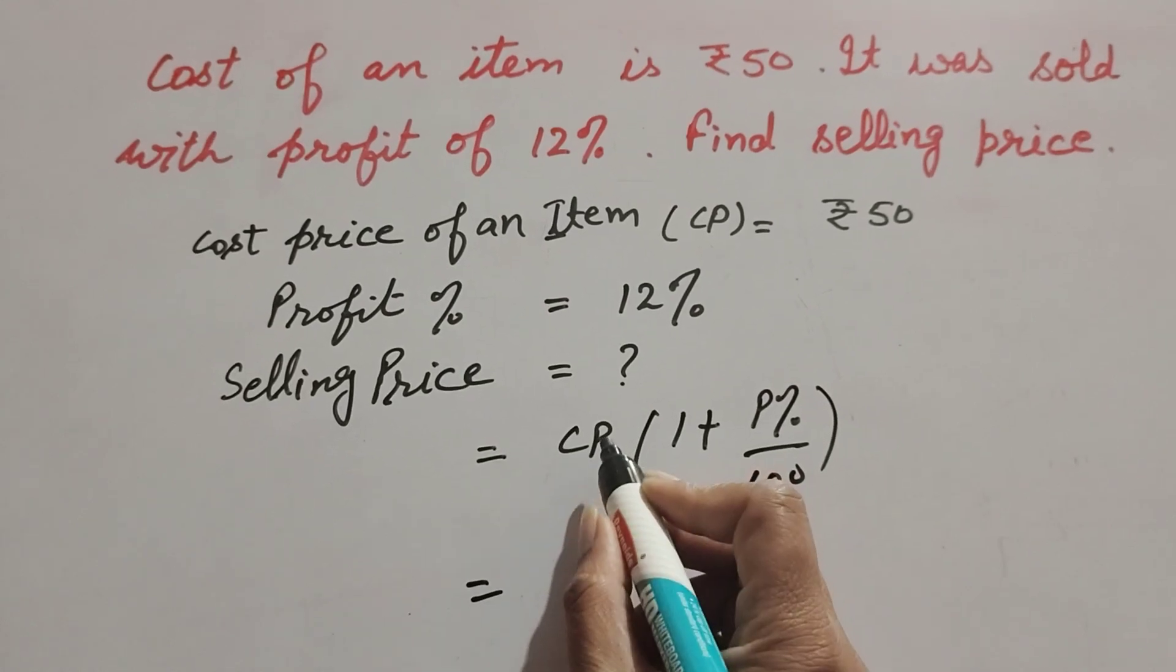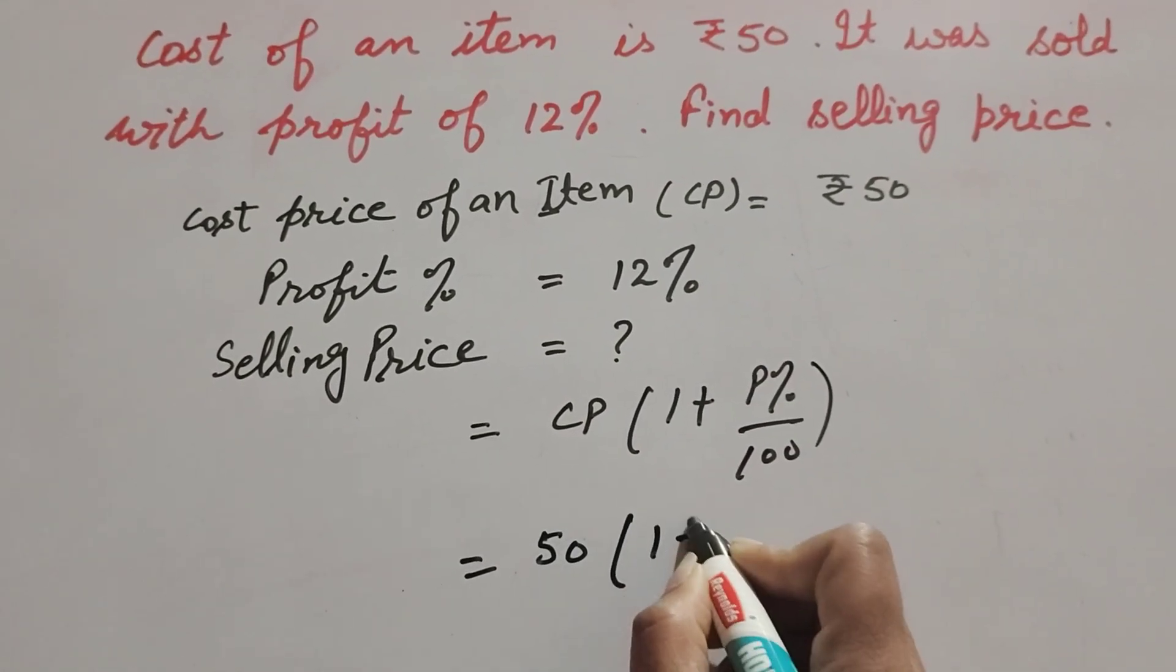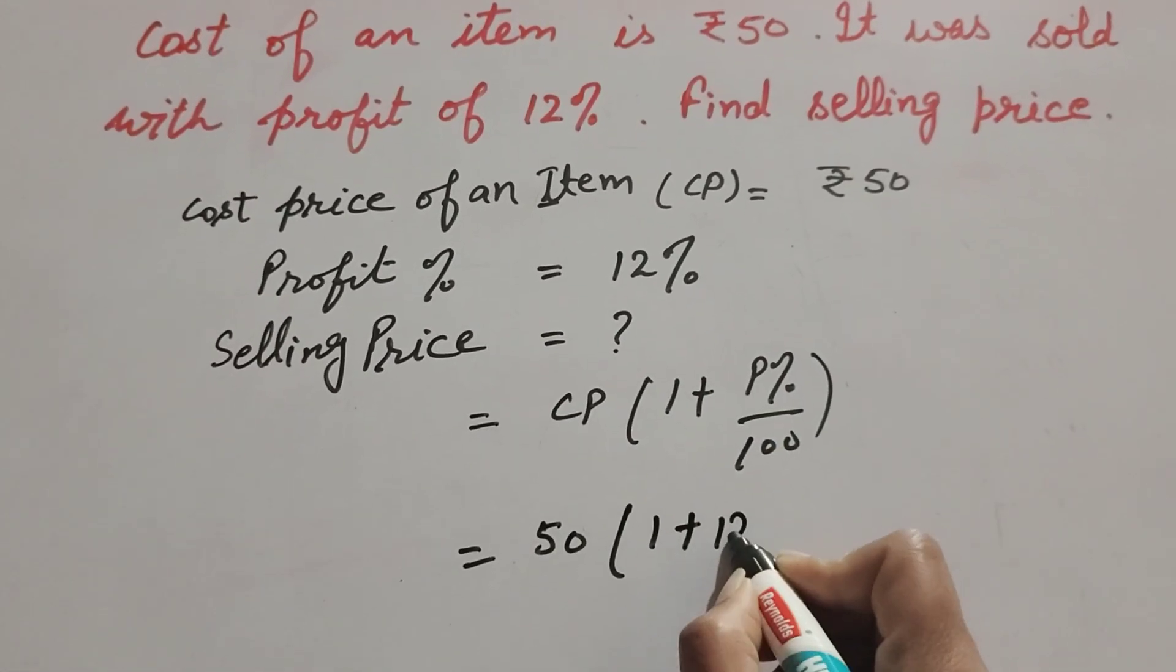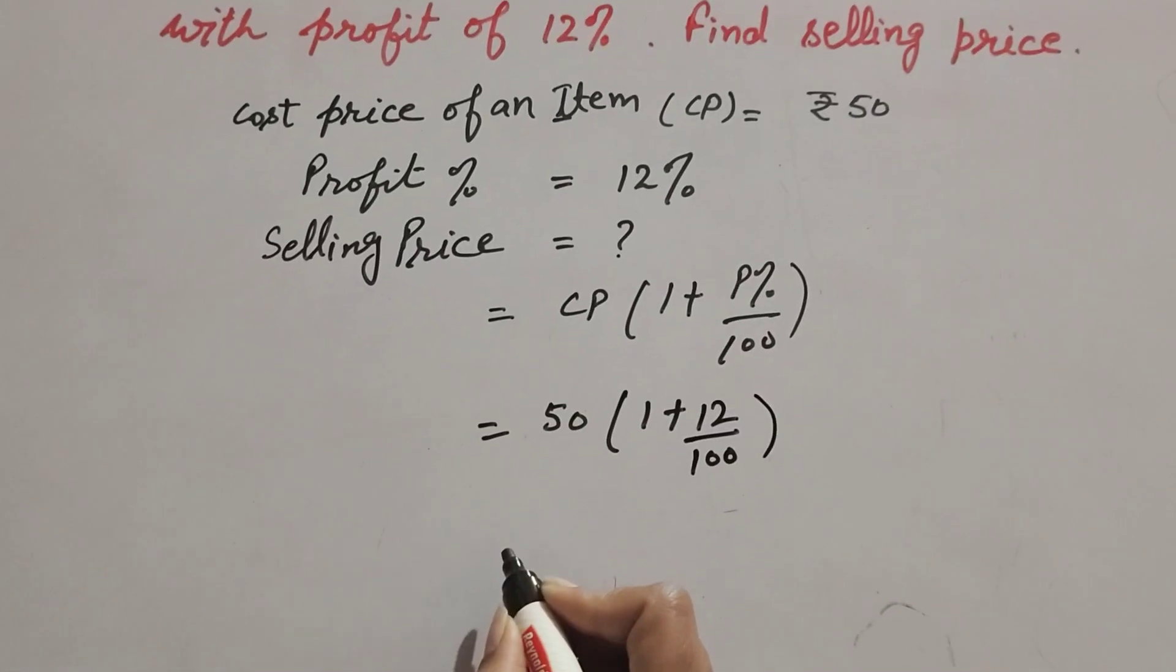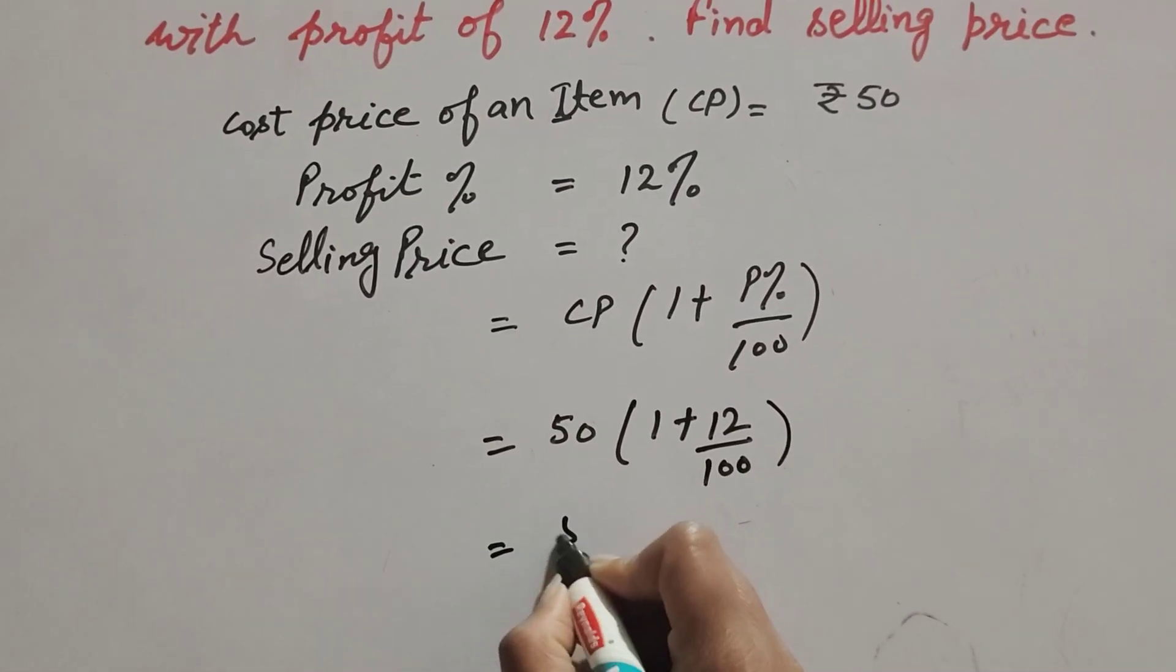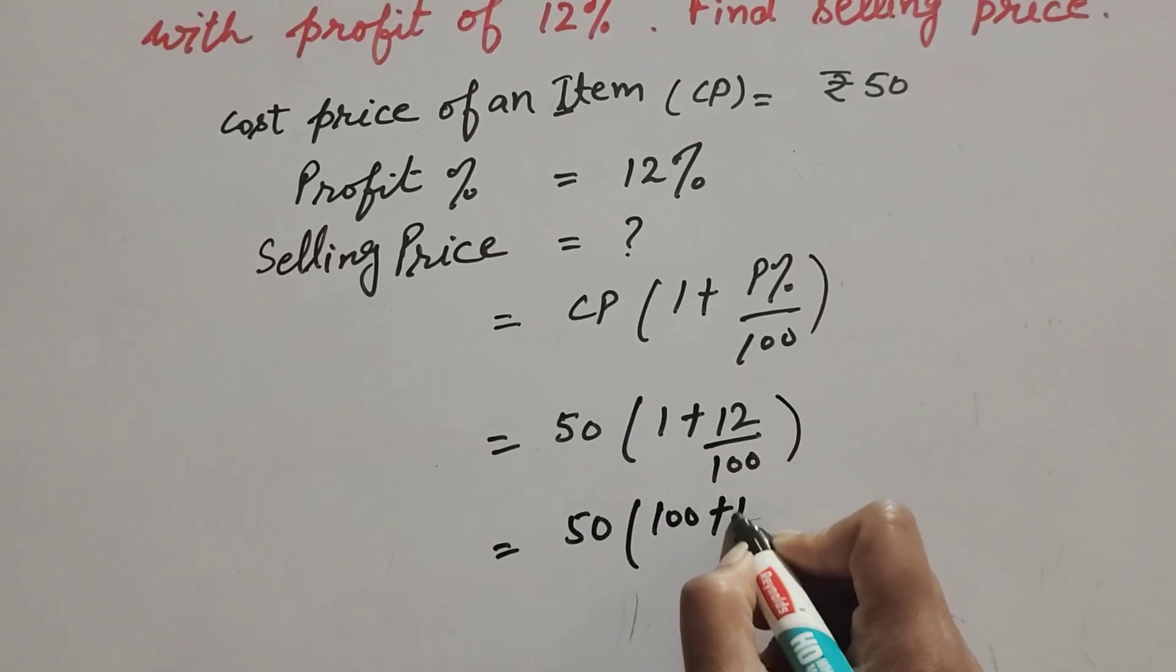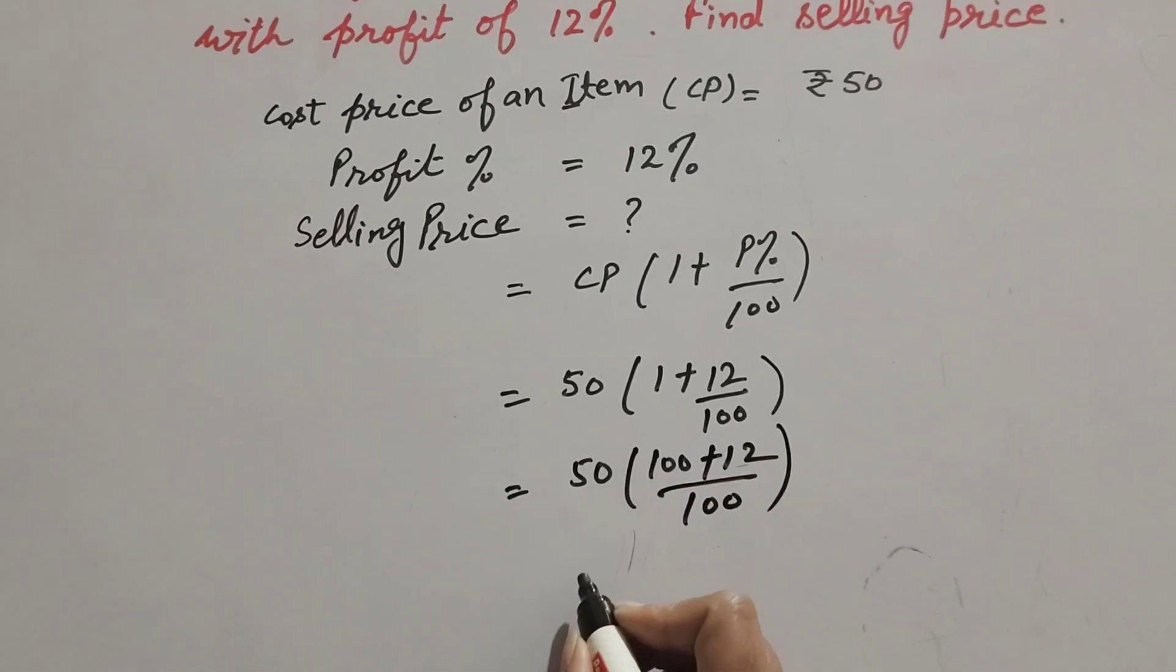CP, which is cost price, is ₹50 × (1 + 12/100). It is equal to 50 × (100 + 12)/100. We simplify this term. It is equal to 50 × 112/100.